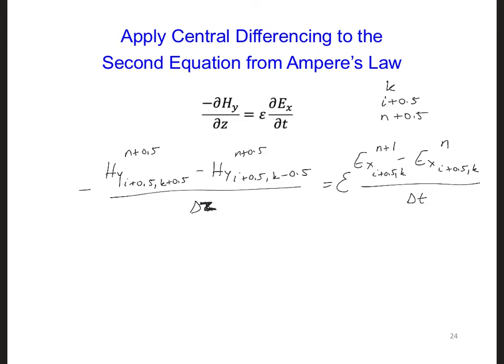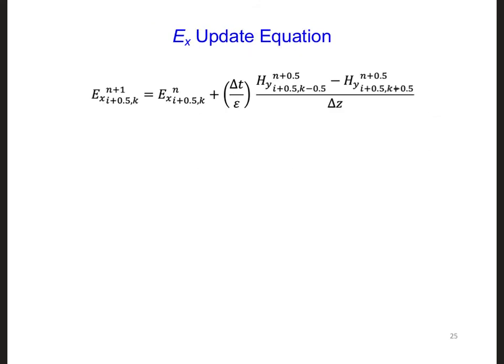So now we can solve for the future value, the future field component, which would be Ex at n plus 1. And we end up with what's shown here. We just rearrange the terms, so we solve for the future Ex value.